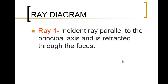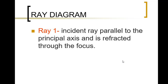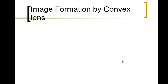Ray 1 is an incident ray coming from the object, parallel to the principal axis, and then refracted through the focus. Ray 2 is an incident ray passing through the center and is not refracted. The intersection of the two rays is where the image is located.